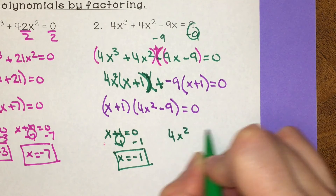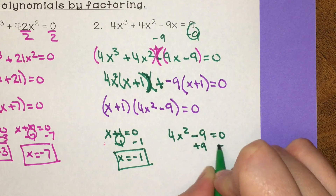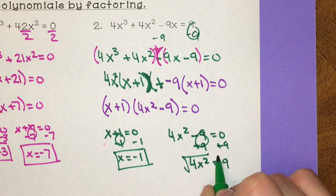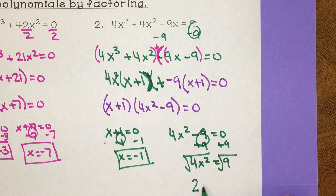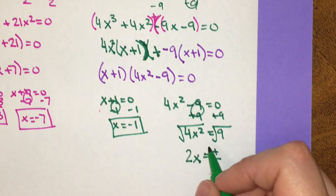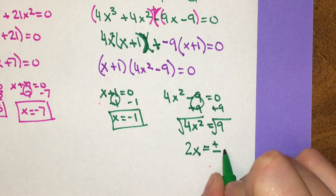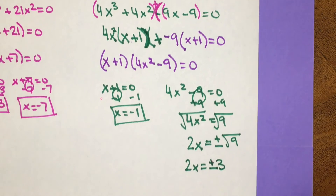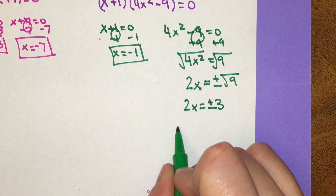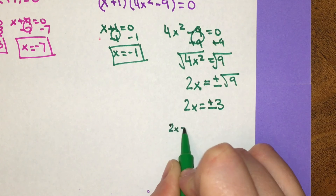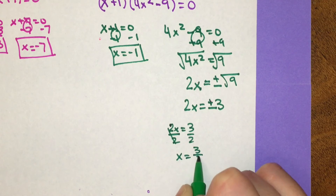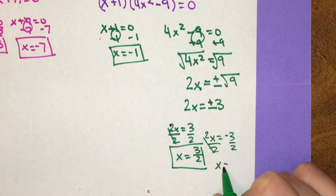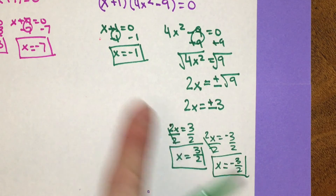For 4x squared minus 9 equals 0: add 9 to both sides to get 4x squared equals 9. Take the square root of both sides — square root of 4x squared is 2x, and we account for both positive and negative. Square root of 9 is 3, so 2x equals positive and negative 3. Solving each separately: 2x equals 3 gives x equals 3 halves, and 2x equals negative 3 gives x equals negative 3 halves.